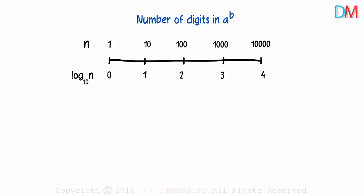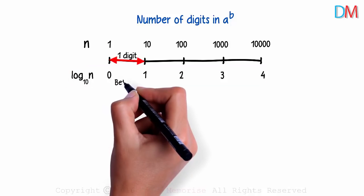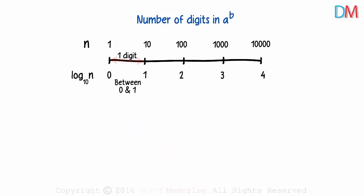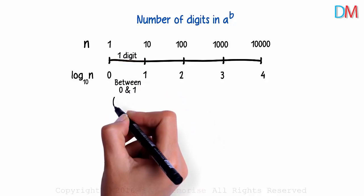Any number between 1 and 10 will have how many digits? Numbers like 3, 5.5, 9.8, they all have one digit to the left of the decimal point. And if we look at the log scale, we can say that if the number has one digit, then its log will be between 0 and 1. The logarithm will be of the form 0 point something.